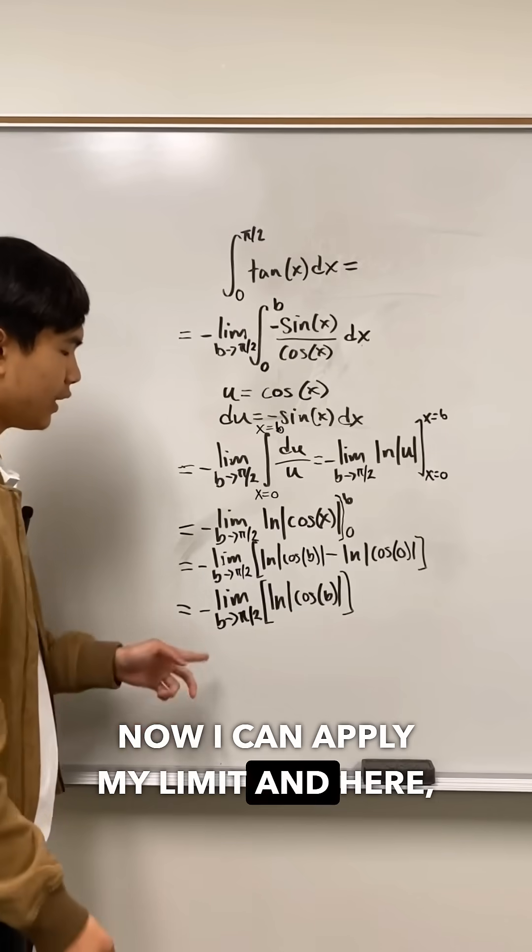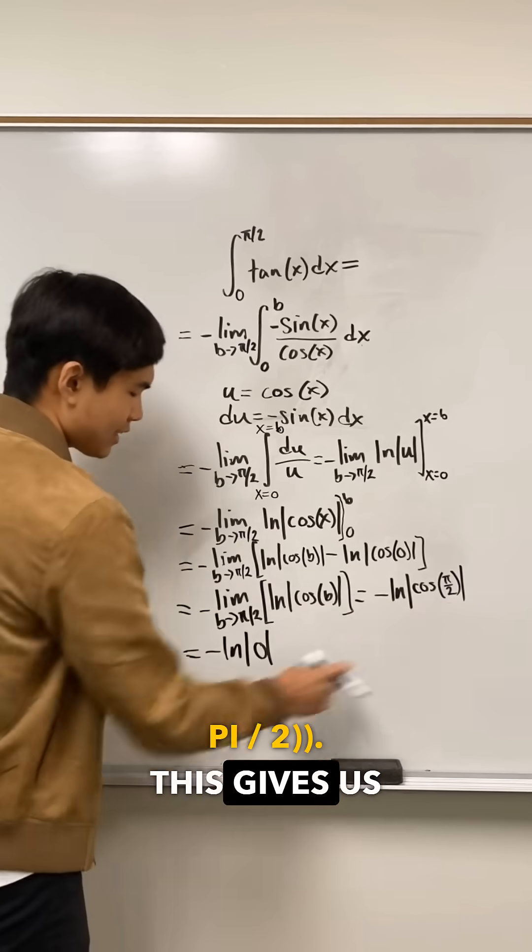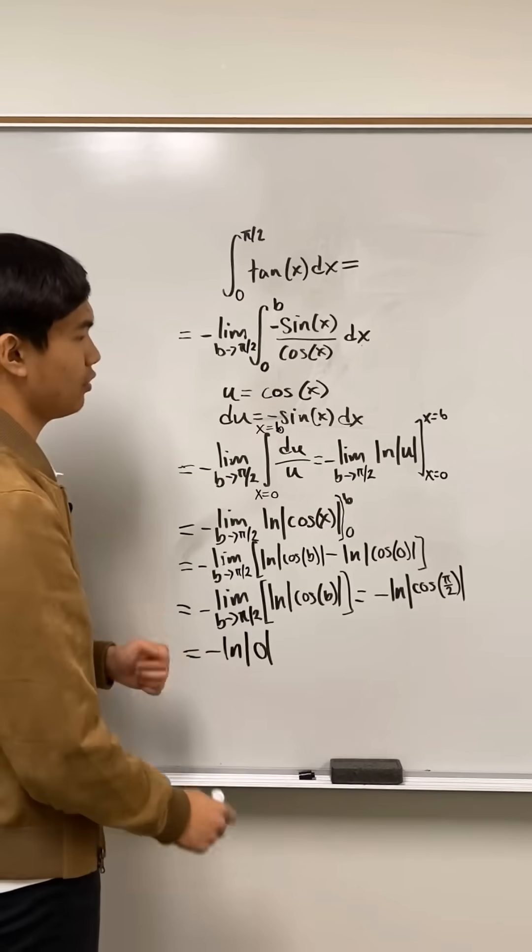Now I can apply my limit, and here I can just direct substitute. We have this is the negative ln of cosine of pi over 2. This gives us a negative ln of 0, but ln of 0 is undefined, so this integral diverges.